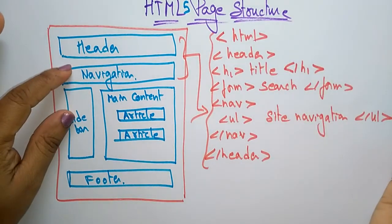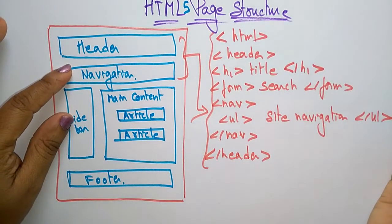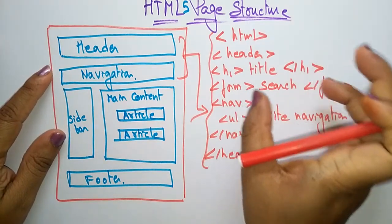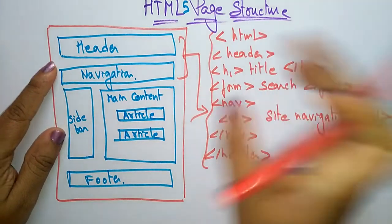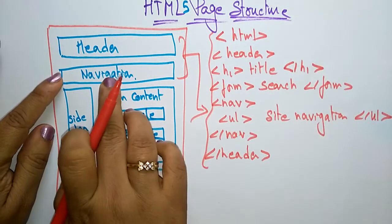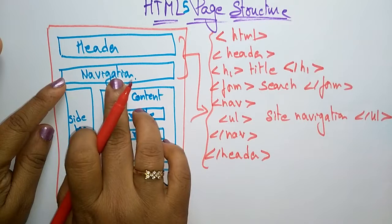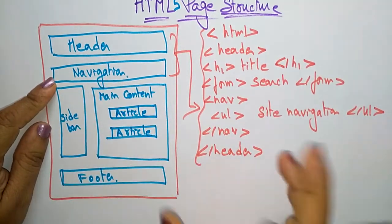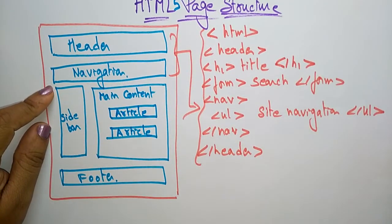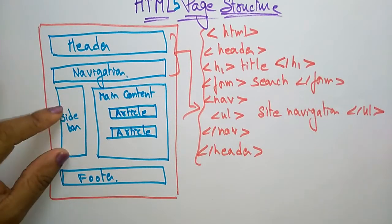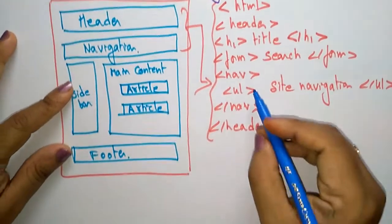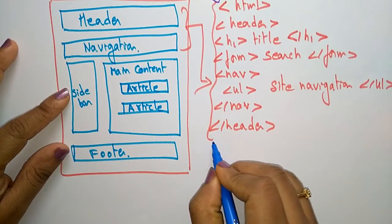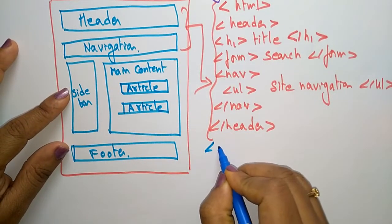First, create the header and write the title that has to be present on the header. Then add the navigation section with site navigation links, and close the header tag. Next, coming to the sidebar.